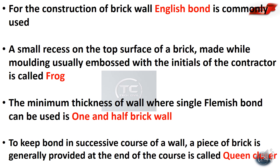The minimum thickness of wall where single Flemish bond can be used is 1.5 brick wall thickness, which is equivalent to 30 cm.